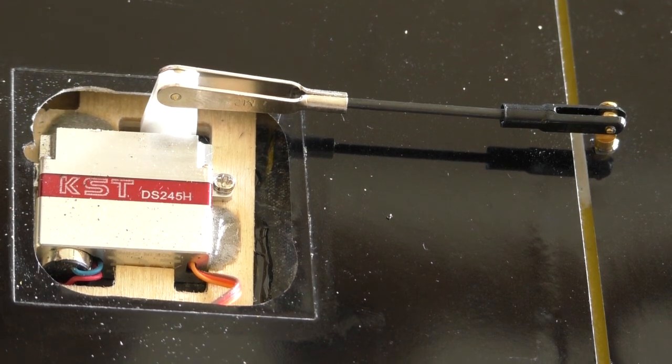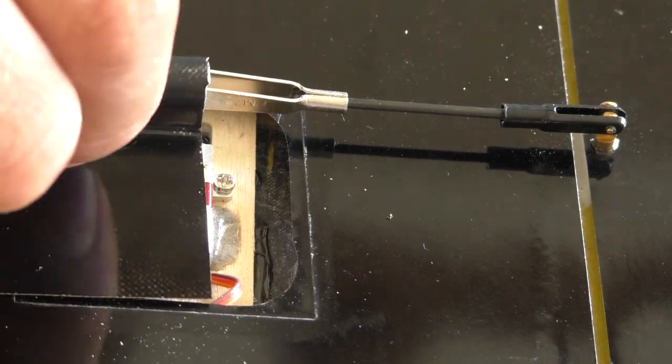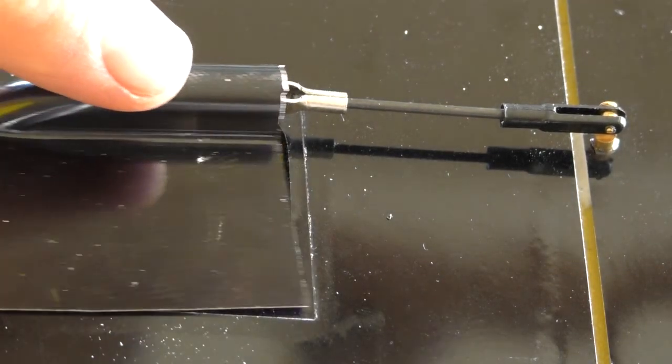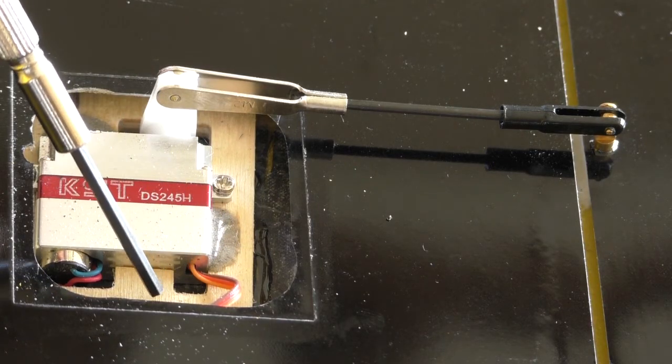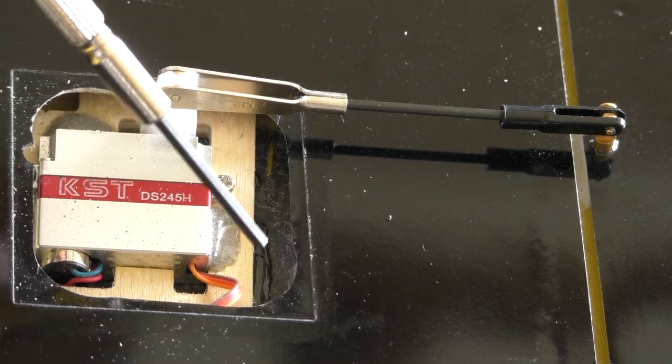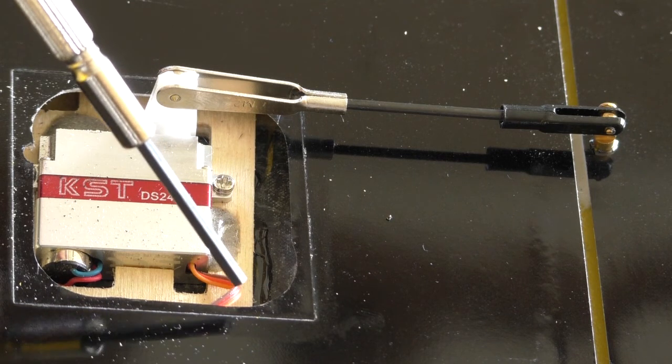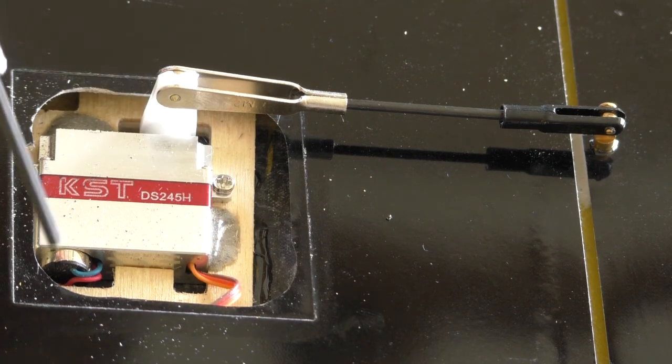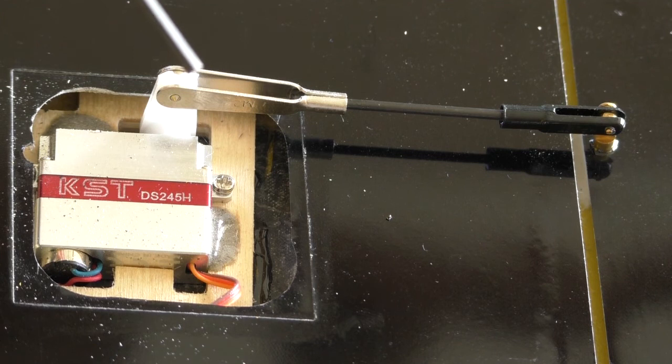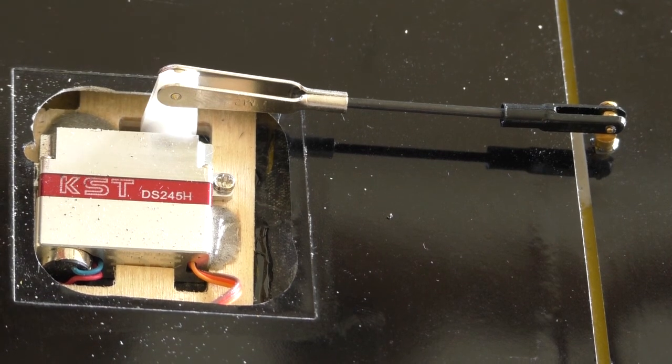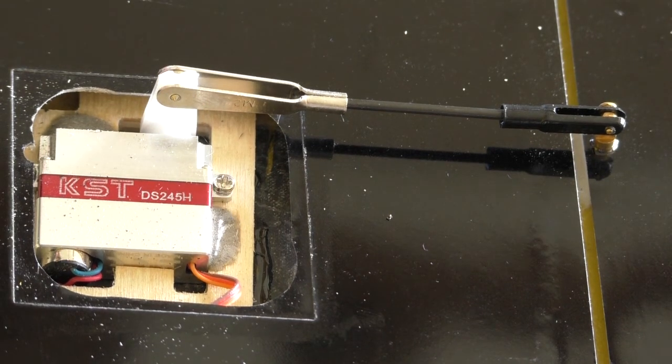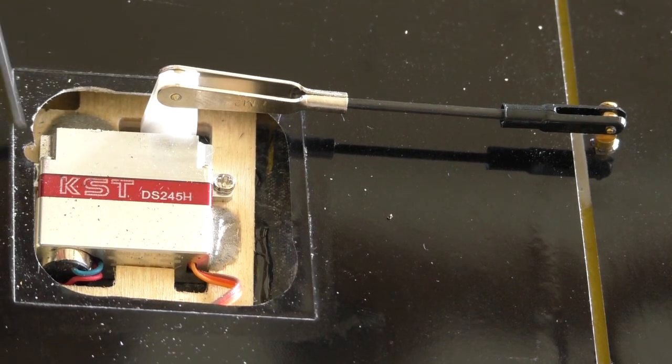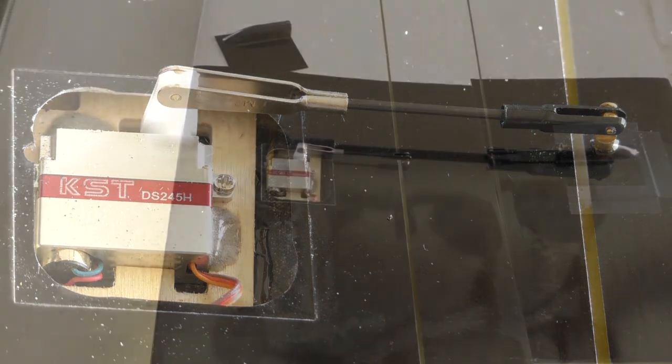I just glued the servo frame to the upper skin of the wing, which already has a carbon fiber covering. Then I put a bead of epoxy mixed with glass balls there. It's easy to remove with the Dremel and then just remove the two screws securing the servo.